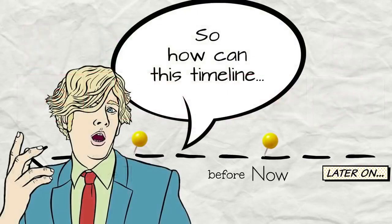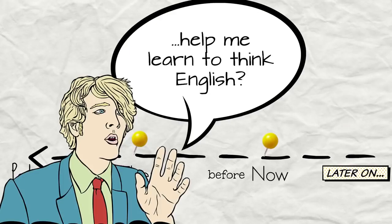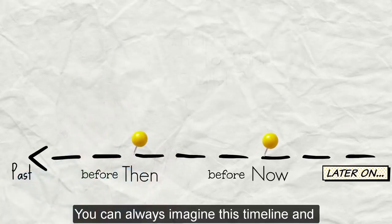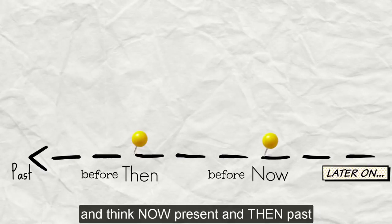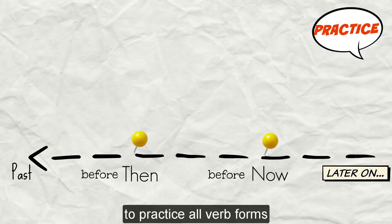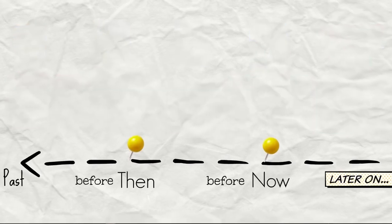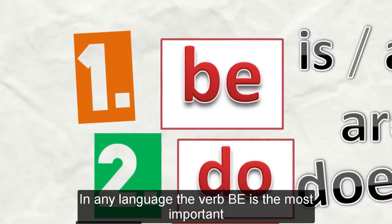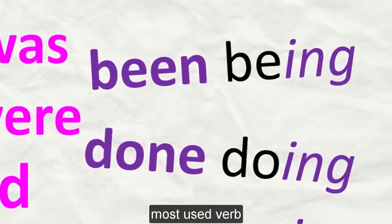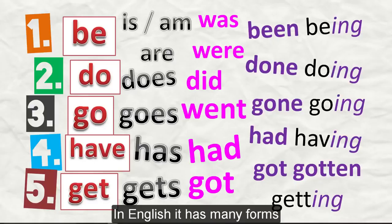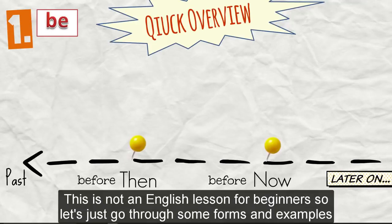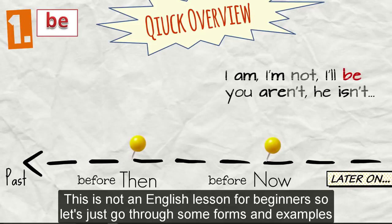So how can this timeline help me learn to think English? You can always imagine this timeline and think now, present and then, past to practice all verb forms. Let's just have a quick look at the verb to be. In any language, the verb be is the most important, most used verb. In English, it has many forms. This is not an English lesson for beginners, so we'll just go through some of the forms and examples.